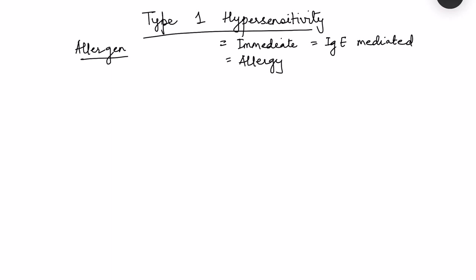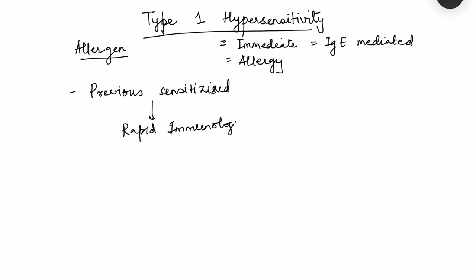So what is this Type 1 hypersensitivity reaction? The key terms are that it is a hypersensitivity reaction in a previously sensitized individual, and when there is subsequent exposure to the allergen, there is a rapid immunological reaction. So there are two aspects: the sensitization, and the rapid immunological responses.